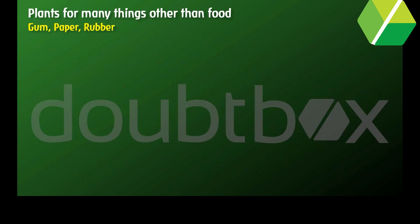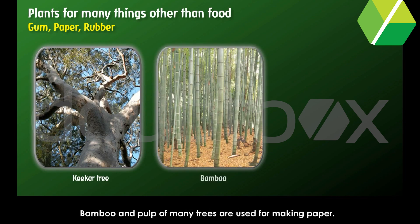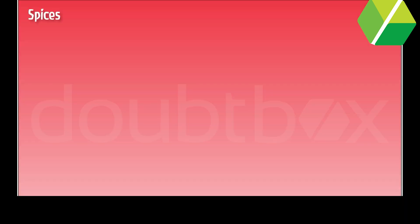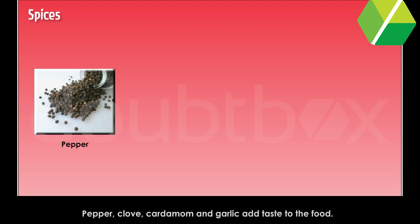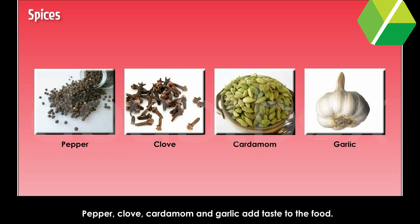Gum, Paper and Rubber: We get gum from the keeker tree. Bamboo and pulp of many trees are used for making paper. We get rubber from the rubber tree. We also get spices from plants — pepper, clove, cardamom and garlic add taste to the food.